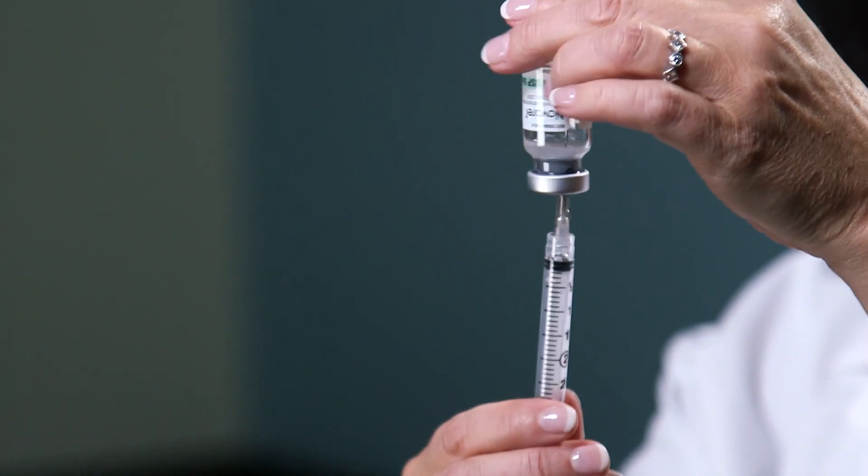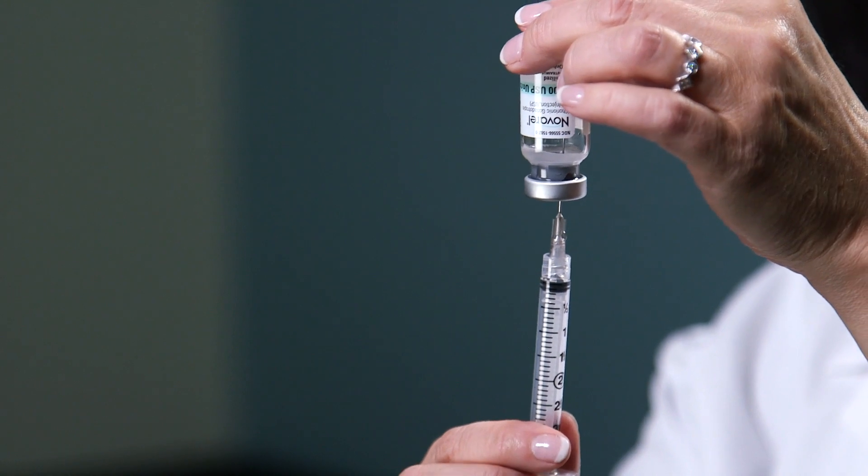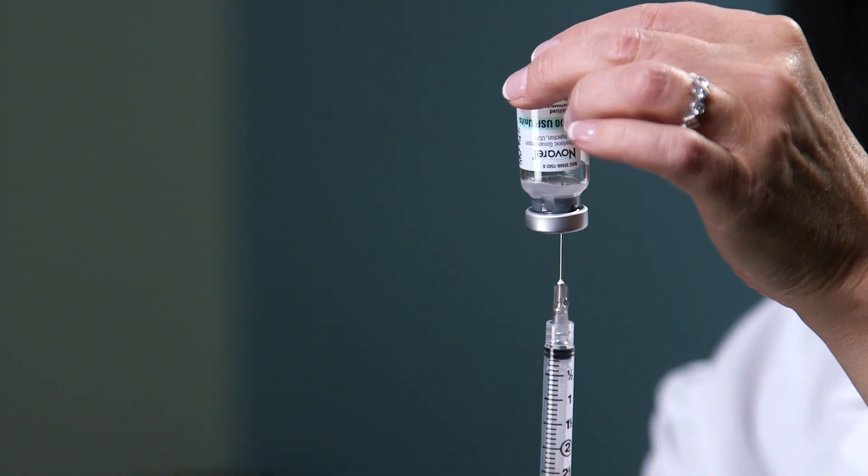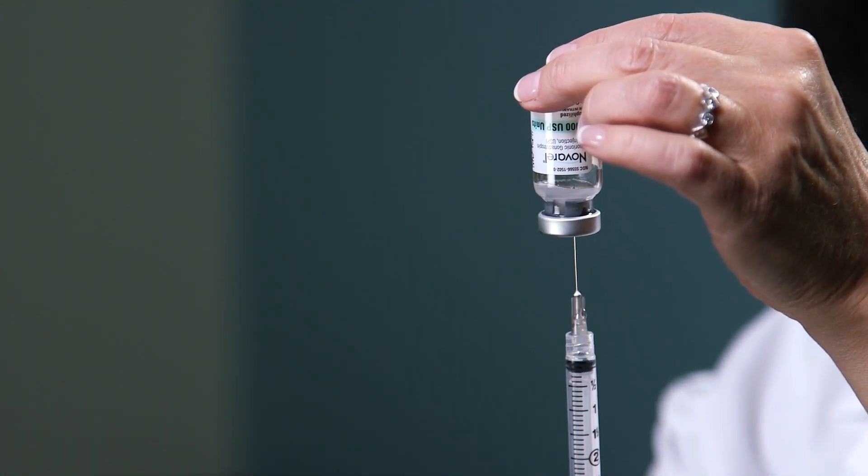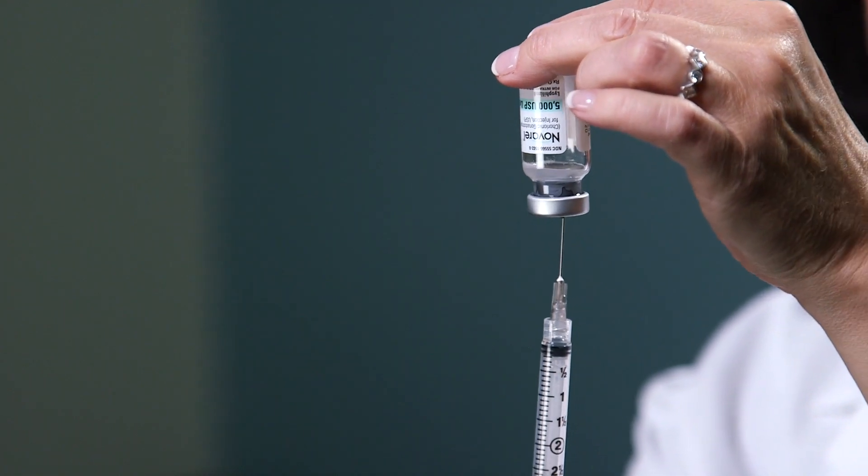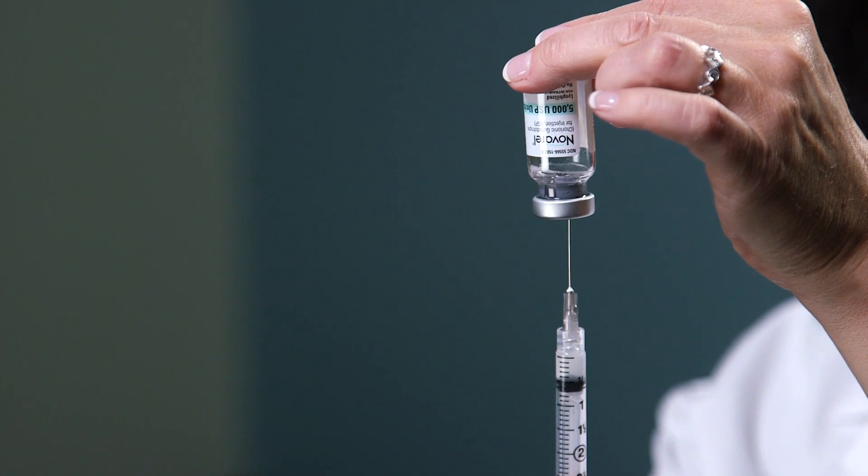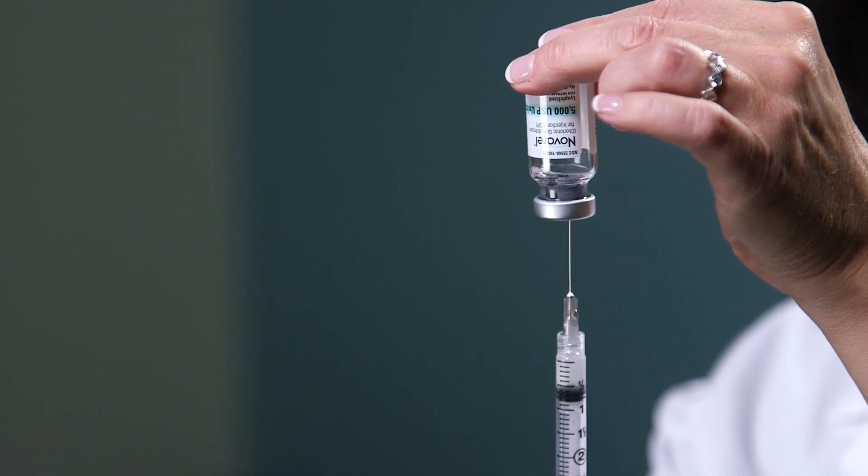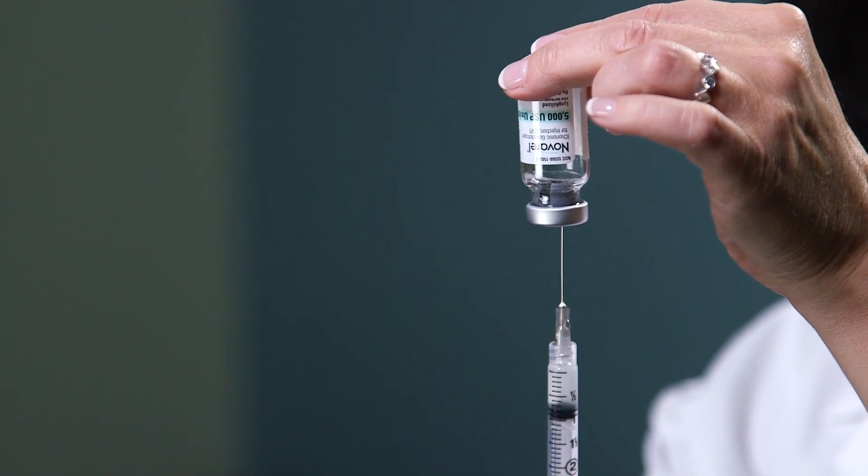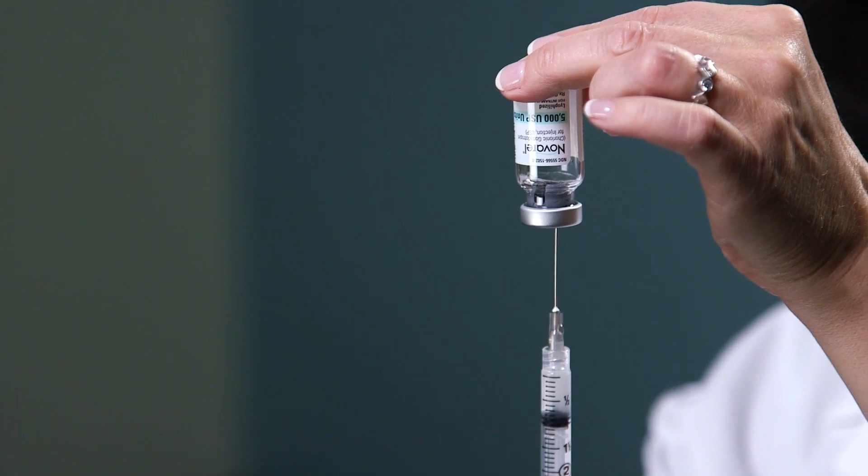Turn the vial upside down. Pull the needle down so the very tip of the needle stays within the liquid. It's a very small amount of liquid. You're going to be gently pulling down on the plunger while at the same time backing the needle out of the vial, so that it stays in the liquid the whole time.